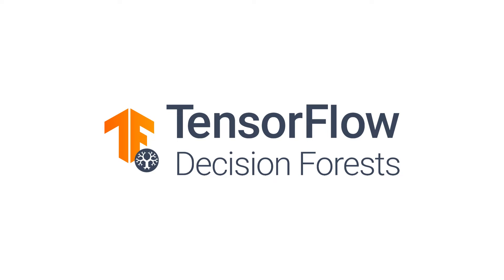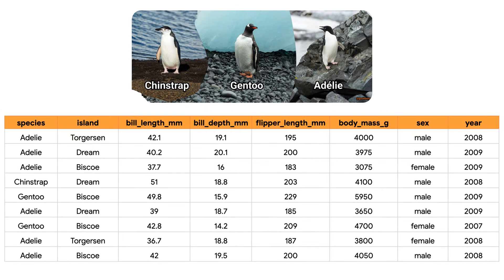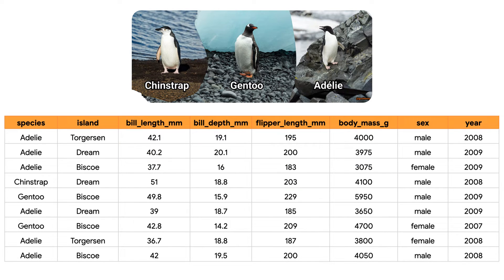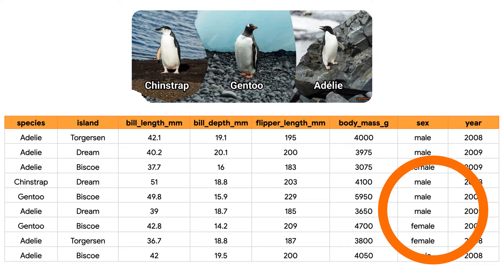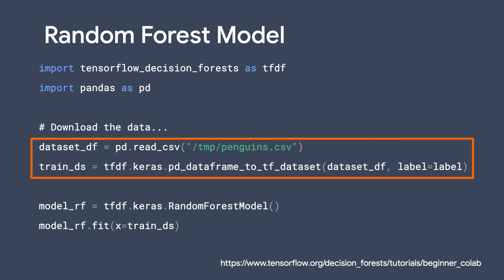Let's walk through an example using the TensorFlow Decision Forest library. This tutorial trains a binary classification random forest on the Palmer Penguins dataset. The Palmer Penguins data contains size measurements for three penguin species observed on three islands in the Palmer Archipelago in Antarctica. The dataset contains some numerical features, categorical features, and even some missing data. TensorFlow Decision Forest supports all these feature types natively, so we don't need to do any preprocessing in the form of one-hot encoding, normalization, or an extra is-present feature. We use a helpful method to convert the Pandas DataFrame into a TensorFlow dataset.